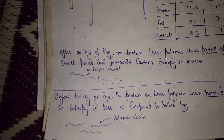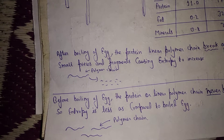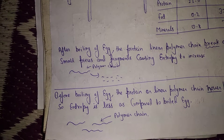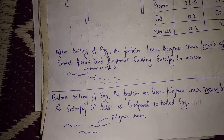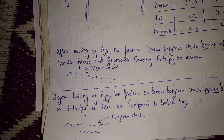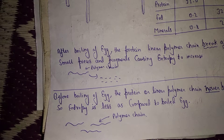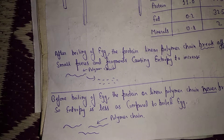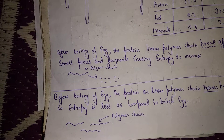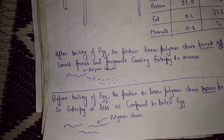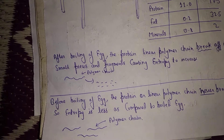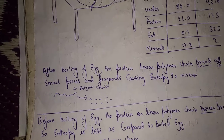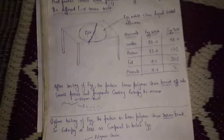Most students think that entropy will decrease after boiling of the egg because the liquid yolk gets solidified and there is no random movement. But that is wrong. After boiling of the egg, entropy will increase due to the breaking of the polymer chain which contains the protein. Thank you for watching this video.